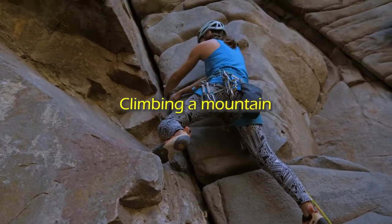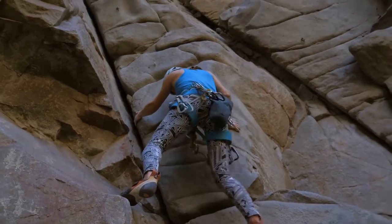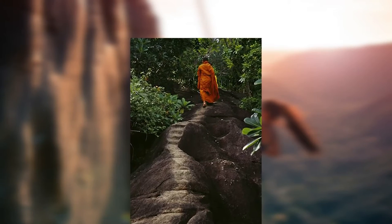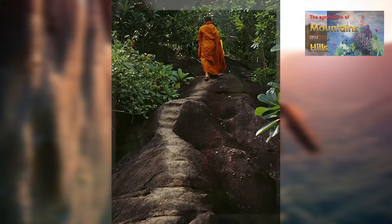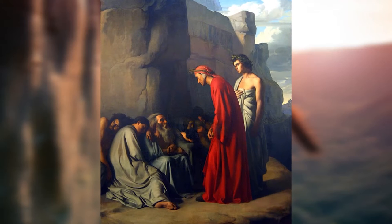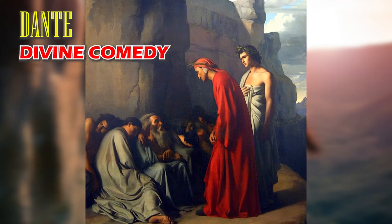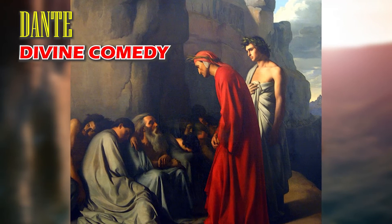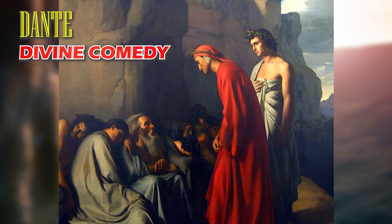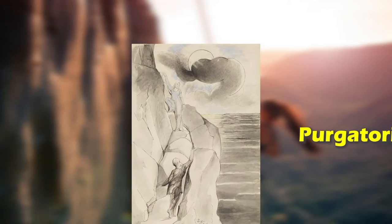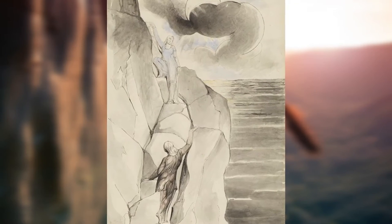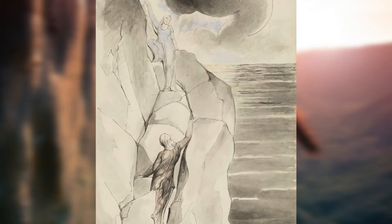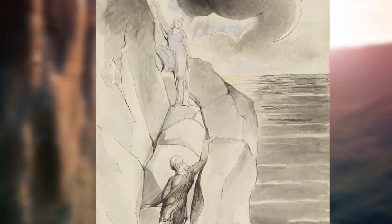Climbing a Mountain: In this form of ascent, the initiate climbs the steep spiral path of a hill or mountain. An example of this form of ascent can be found in Dante's Divine Comedy, a poem in three parts written in the early 14th century. Purgatorio — Italian for Purgatory — is the second part of Dante's Divine Comedy, following the Inferno and preceding the Paradiso.